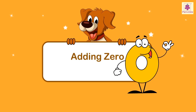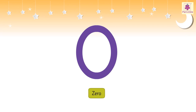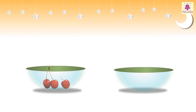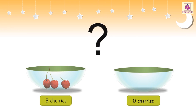Adding Zero. Let us see what happens when zero is added to any number. There are three cherries in the first bowl and no cherries, or zero cherries, in the second bowl. How many cherries are there in both the bowls in all?